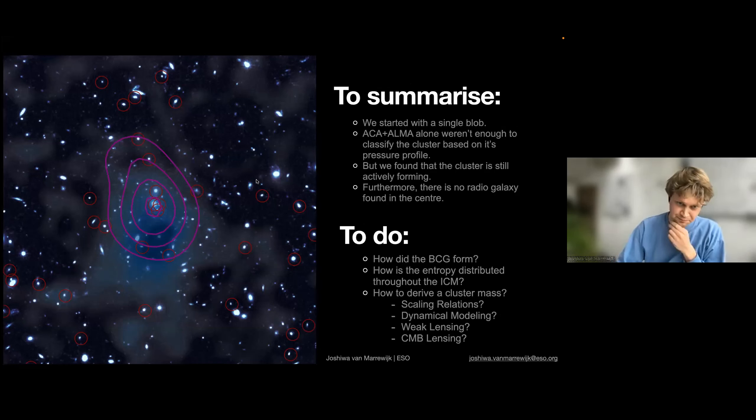So to summarize, we started with a single blob from ACT from the Atacama Cosmology Telescope observations—just everything within a single beam. And we added ACA and ALMA to see the magic which is happening underneath the hood. Too bad that we couldn't yet constrain the pressure profiles based on ACA and ALMA alone because of the filtering and the missing flux problem. But we do find from the imaging and the modeling that there are two components.